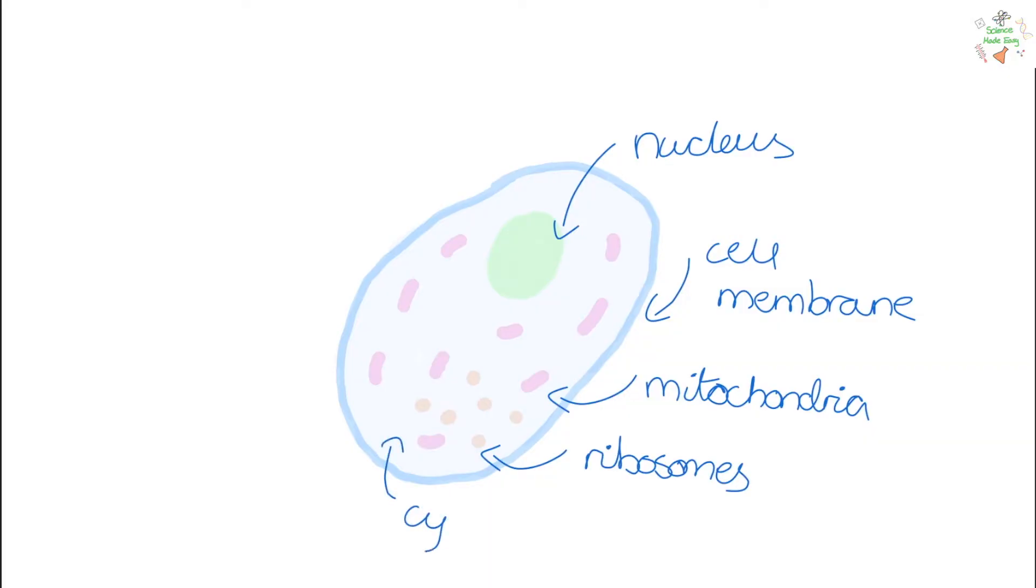Okay so this is our animal cell. We have a nucleus, which is responsible for storing the cell's genetic information, so its DNA. Around the outside we have a cell membrane which controls what enters and exits the cell. We have mitochondria, which is responsible for respiration, so how the cell produces energy. Ribosomes to make essential proteins for the cell, and the cytoplasm, which is where chemical reactions happen.